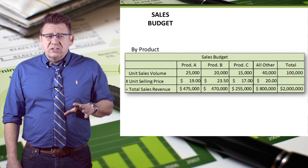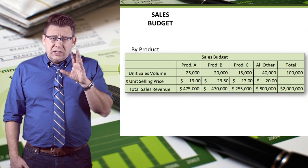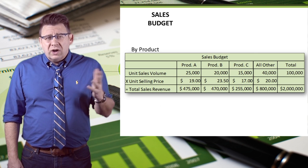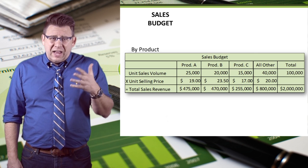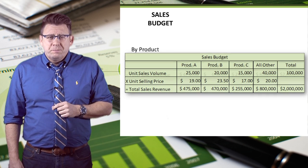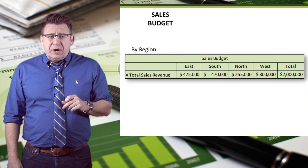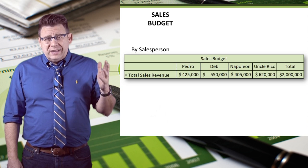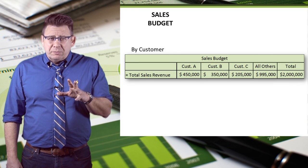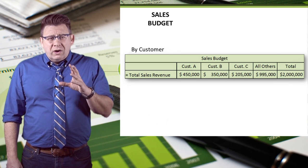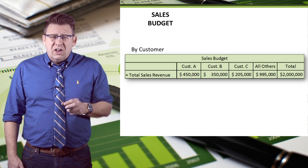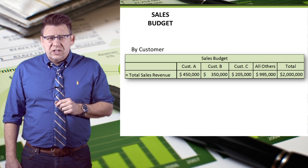A sales budget is also usually prepared by product, where a company lists its top five or ten products and then all others together. A sales budget could be prepared by region, by salesperson, and by customer, where a company's top five or ten customers are listed and then all others combined.